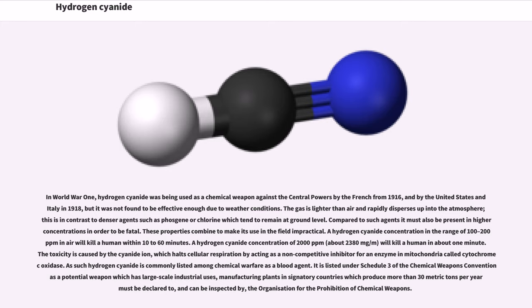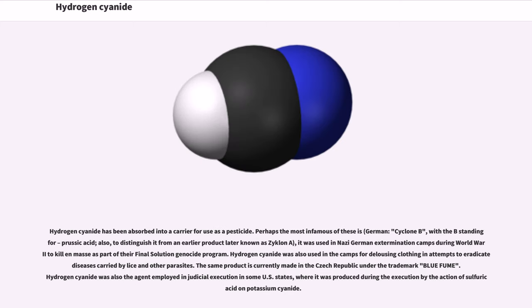As such, hydrogen cyanide is commonly listed among chemical weapons as a blood agent. It is listed under Schedule 3 of the Chemical Weapons Convention as a potential weapon which has large-scale industrial uses. Manufacturing plants in signatory countries which produce more than 30 metric tons per year must be declared to and can be inspected by the Organization for the Prohibition of Chemical Weapons.